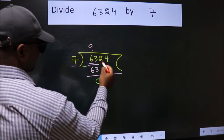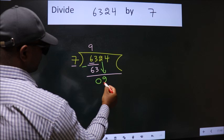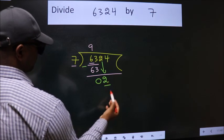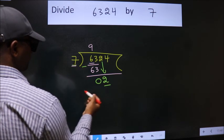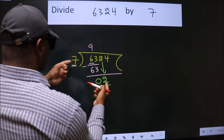After this, bring down the beside number. So 2 down. Here we have 2, here 7. 2 is smaller than 7.